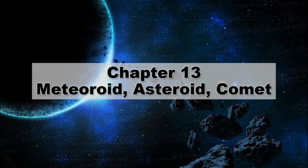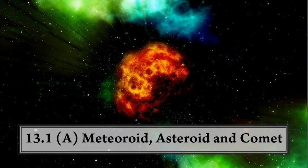Hello everyone! Welcome back to Online Classroom, JQT. In this video, we are going to enter into Chapter 13: Meteoroid, Asteroid, and Comet. We are going to look at these three objects, what they are, and discuss a little bit of their respective characteristics.